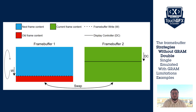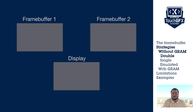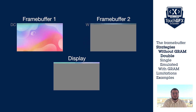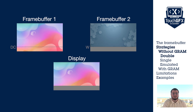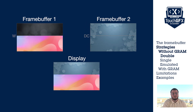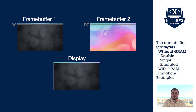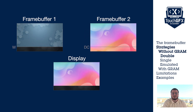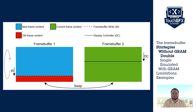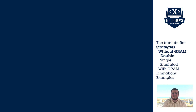Let's first look at displays without GRAM, such as LTDC displays. The first strategy is double framebuffer. Having two framebuffers allows you to have one framebuffer being read by the display while the other one is rendering. The first framebuffer on the left is being rendered while the second framebuffer on the right is read by the display controller. Once they are both done, they swap roles. Note that to maximize frames per second, the writing must be faster than the transferring. This strategy prevents tearing and allows maximal time for rendering, but it requires twice as much memory as the next strategy.